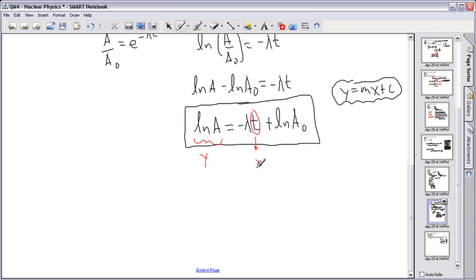So if I graphed ln A as my y and I made t, I made that my x, then what would I get? Well, then this minus λ, that would be my gradient. And if I graphed it, then I would get ln A₀ would be my y-intercept.